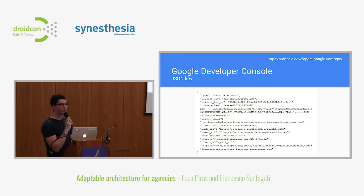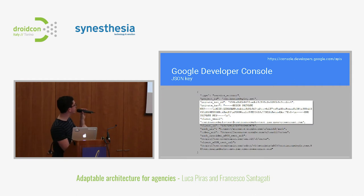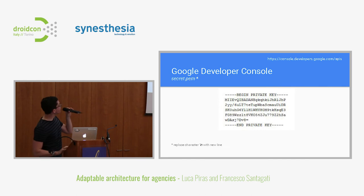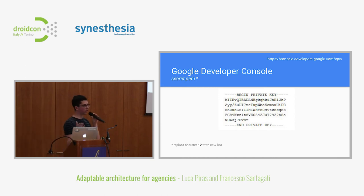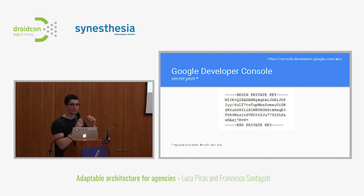The important parts of this JSON key are three parameters: the private key ID, the private key, and the client email. The client email is the identifier of your robot. The private key ID and private key are the password. You take the private key, save it into a PEM file — just any text file — paste the key over there and it's an MD5 hash you keep as a key. It's a private key, so make sure you never, never share this with anyone. This is not my actual key, so if you want to copy and paste it, it won't work.